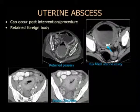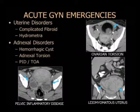Tengan en mente que hay otras formas de infecciones dentro de los anexos con el miometrio. Acá una paciente mayor con pesario y piometra; otra paciente con DIU y fluido con pus en el útero. En conclusión, hablamos de trastornos uterinos y trastornos anexiales: quistes complejos, torsiones y DIU. Gracias.